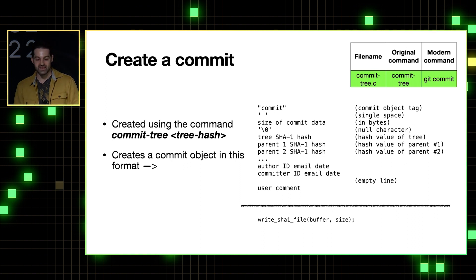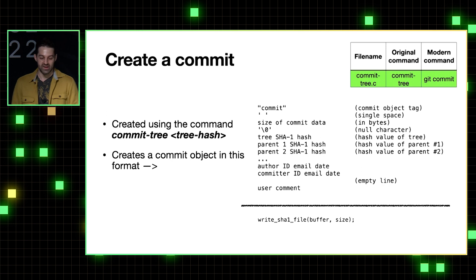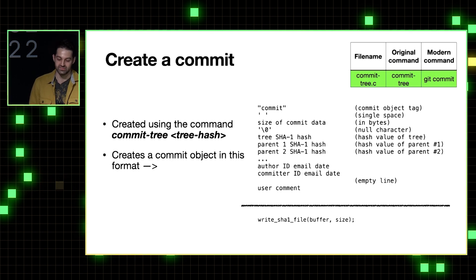So yeah, finally, we've made it to commits, and at this point we have a blob and a tree sitting together in the object database. So let's see how we get a commit there too. And that's created using the commit tree command, along with the hash of the tree that's already in the database.